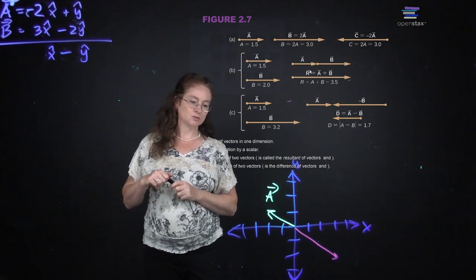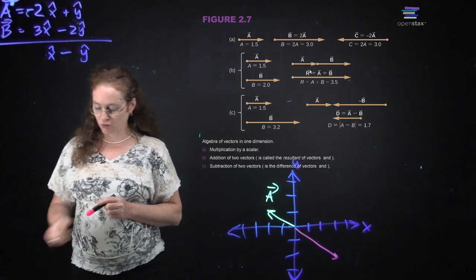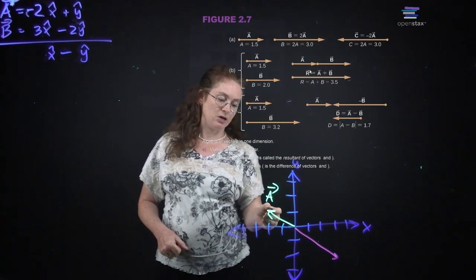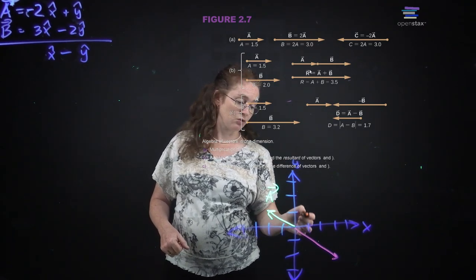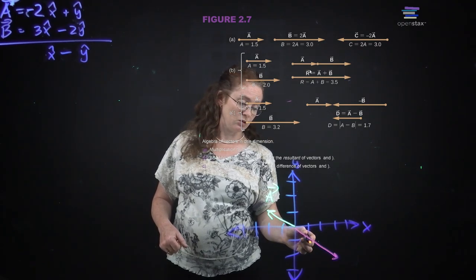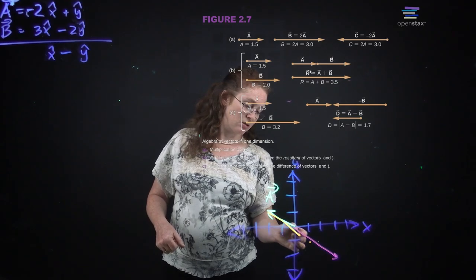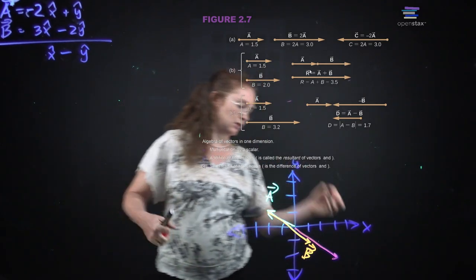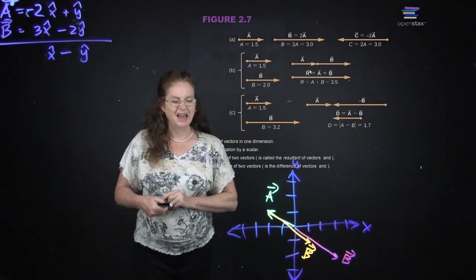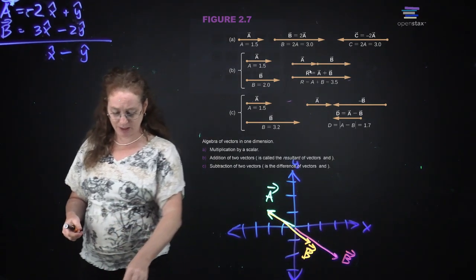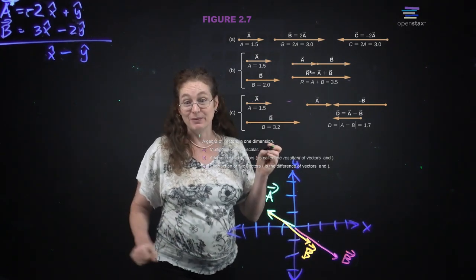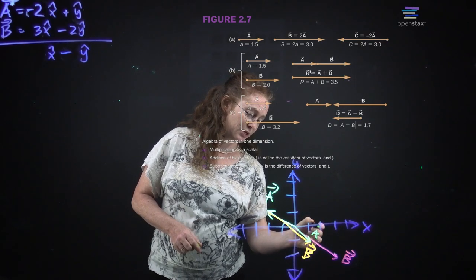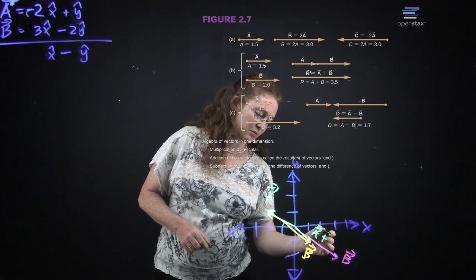Vector A is negative 2 x, plus 1 y-hat. This is A. Then we're going to do B, which is plus 3 x-hat minus 2 y-hat. If we want to draw the sum of those two vectors, I start at A and go 3 in the x direction and 2 down in the y direction. A and B are at slightly different angles. This is A plus B.